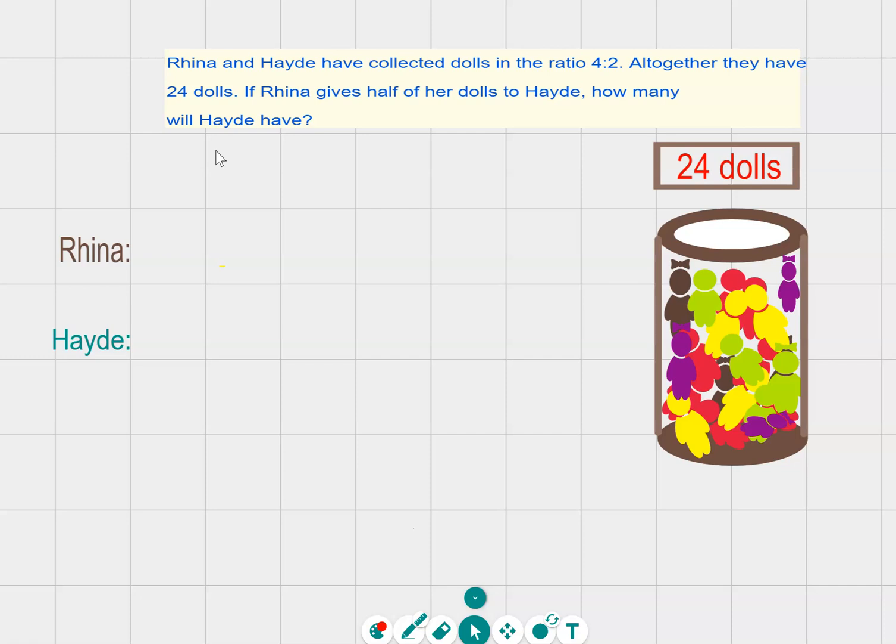So first we're going to represent the ratio in terms of counters. So Rina has 4 parts so we'll give her 4 counters. And Heidi has 2 parts so we'll give her 2 counters.